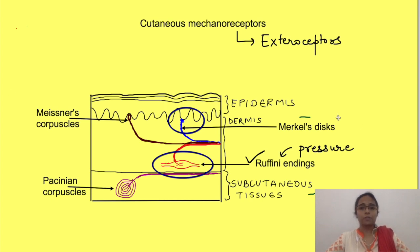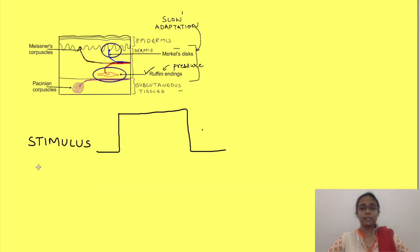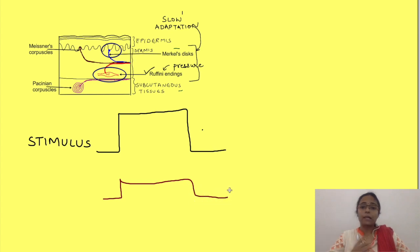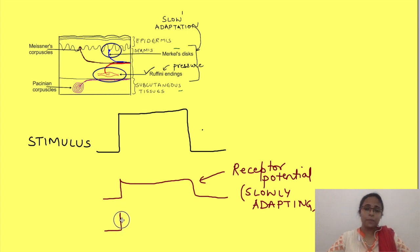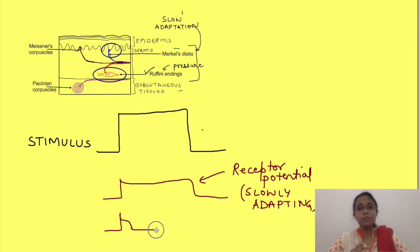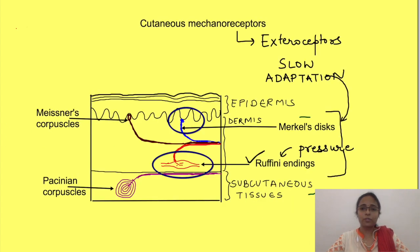Different mechanoreceptors have different rates of adaptation. Ruffini endings adapt very slowly, meaning they detect sustained pressure — the receptor keeps responding throughout the time the stimulus is present. Hair follicle receptors, on the other hand, adapt very fast: when the stimulus arrives they detect it, but over time they stop responding. That is why we feel touch at the beginning of a stimulus but then it is gone — which is why you don't feel your clothes all day.